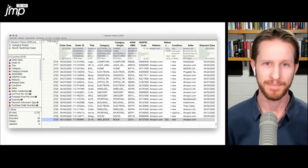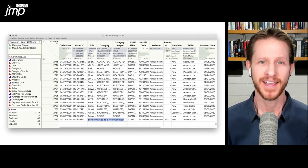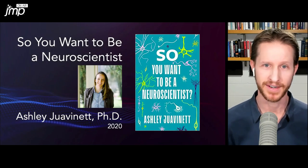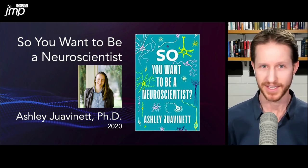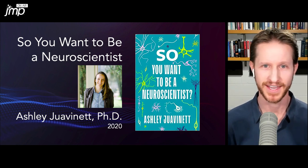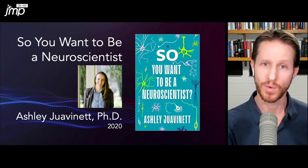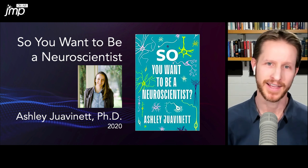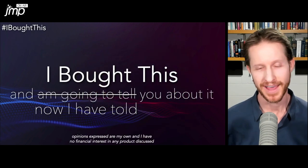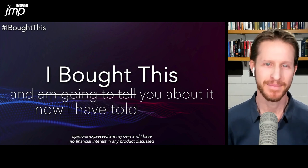One final thing I'll mention: the last thing I ordered was a book called So You Want to Be a Neuroscientist. If you have children or a budding neuroscientist in your life, I recommend this book. It's by a friend of mine, Ashley Jovanette, who is an outstandingly talented person and also a professor of neurobiology at the University of California San Diego. She wrote this book — it's coming out soon and it talks about the things you have to do if you want to get into neuroscience, graduate school, and lots of her recommendations. Another thing I bought and I recommend you buy too.